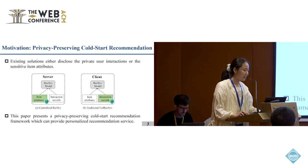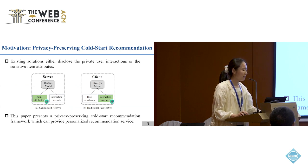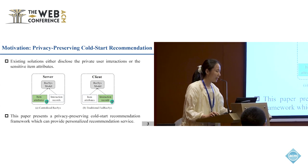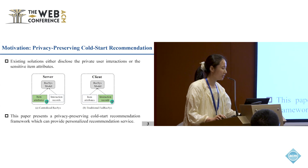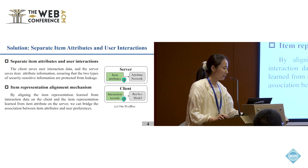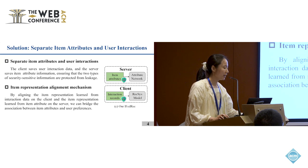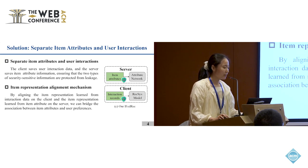However, existing solutions either disclose private user interactions, such as in centralized recommendation systems, or sensitive item attributes, such as in traditional federated recommendation systems. In our paper, we aim to present a privacy-preserving Cold Start Recommendation Framework which can provide personalized recommendation. To this end, we first propose to separate the item attributes and user interactions: the client saves user interaction data and the server saves item attribute information, ensuring that both types of security-sensitive information are protected from leakage.